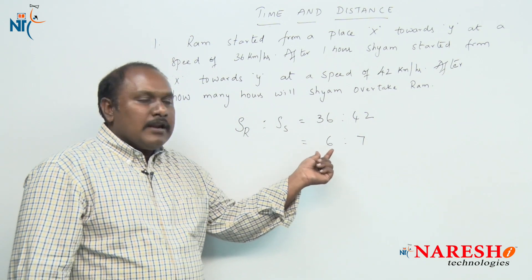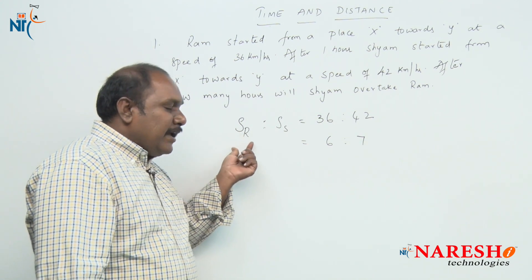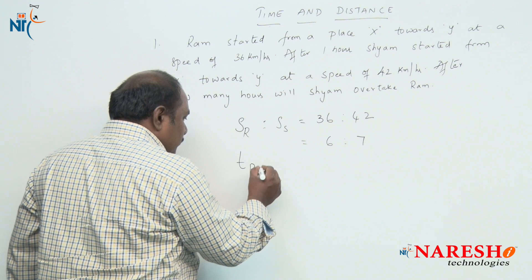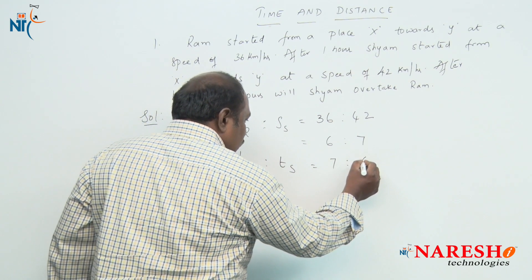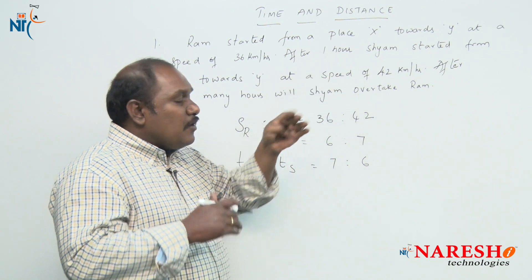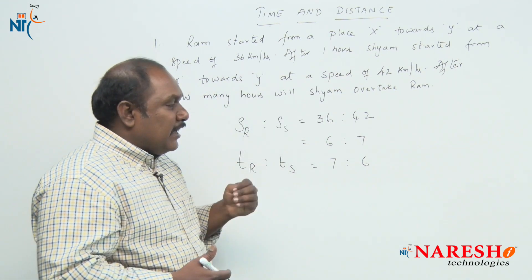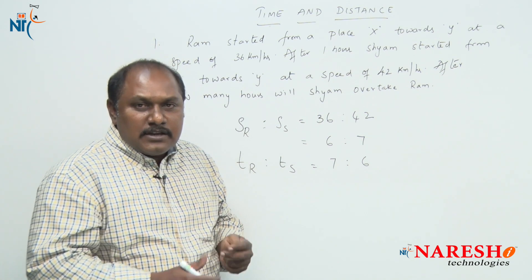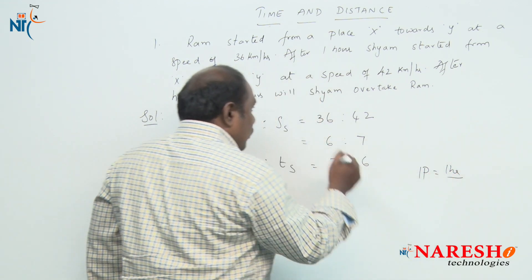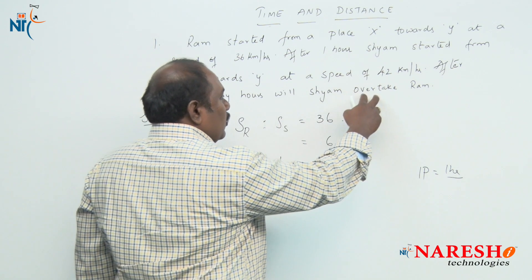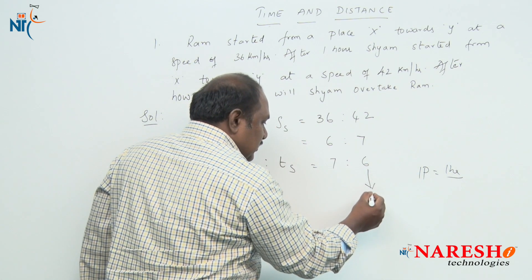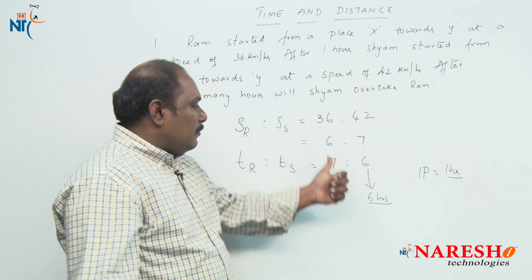Since the speeds of Ram and Shyam are in the ratio 6 to 7, the time taken by Ram and Shyam to travel that distance will be in the ratio 7 to 6. The difference in time is 1 part, and since Shyam starts 1 hour later than Ram, that 1 part equals 1 hour. We want the time taken by Shyam, which is 6 parts. So 6 parts equals 6 hours — Shyam overtakes Ram after 6 hours.